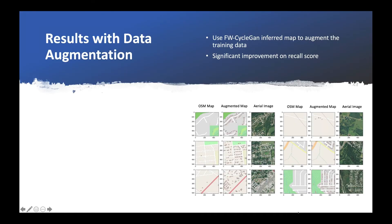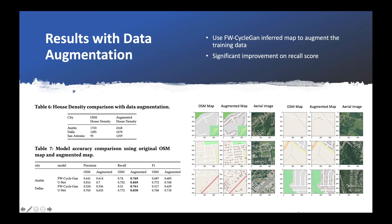To further improve the performance, we introduced incremental data augmentation. We first get the false positive house labels generated from feature-weighted CycleGAN and add them back to the training dataset to form the augmented training dataset.